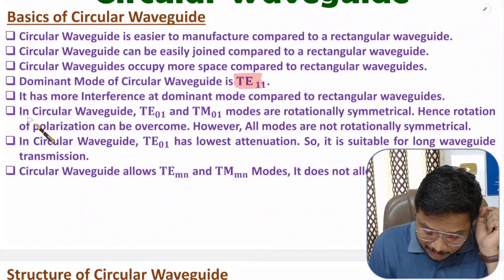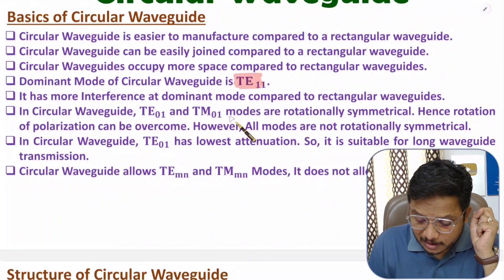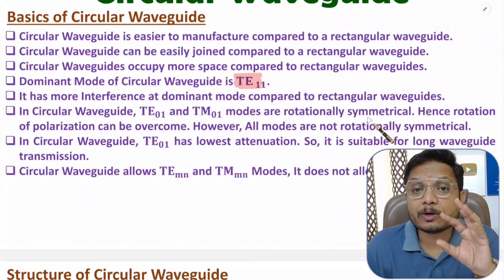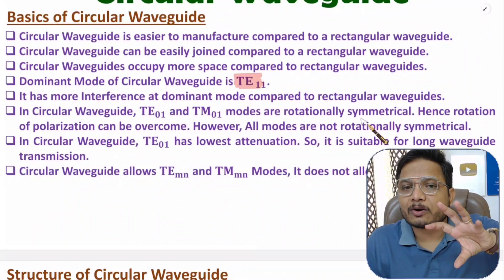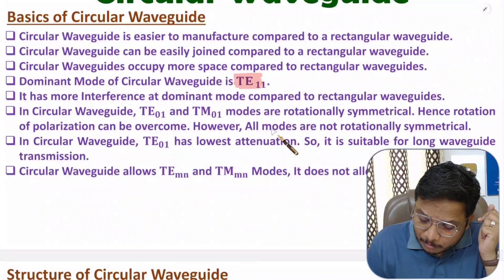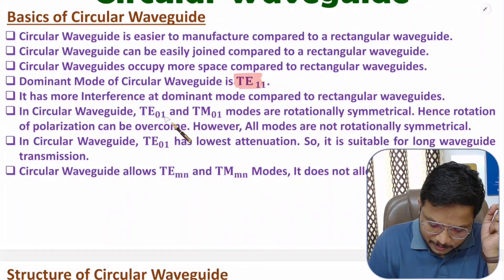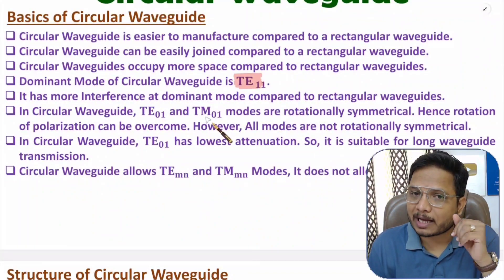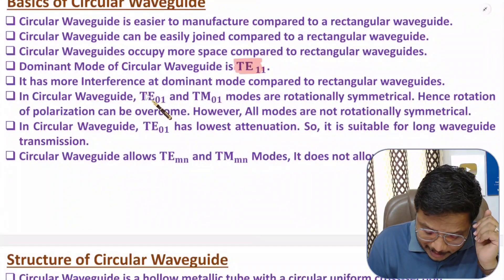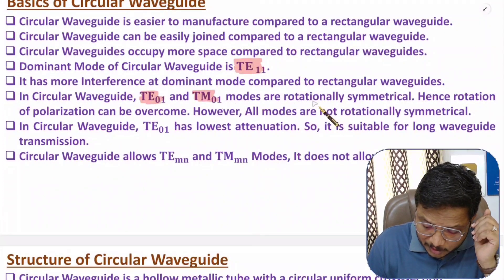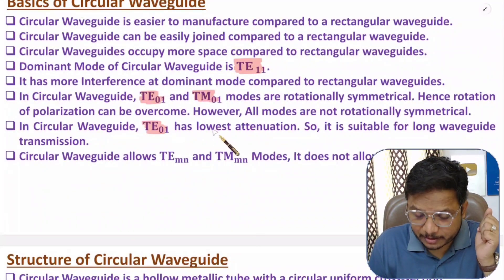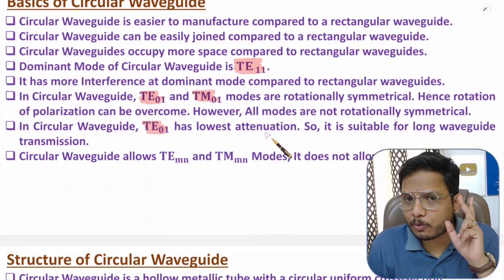With circular waveguide, TE01 and TM01 modes are rotationally symmetric. Because these modes are rotationally symmetric, there are no issues with polarization. However, not all modes are rotationally symmetric — with other modes there can be polarization issues. Also, TE01 mode in circular waveguide has the lowest attenuation among all modes.